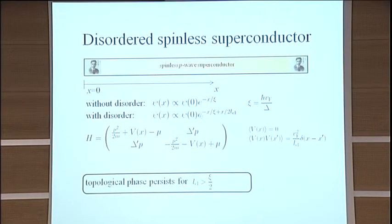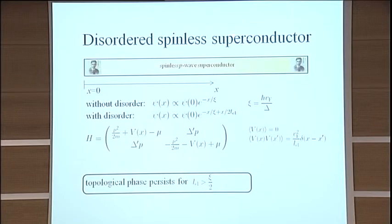And you can also see what happens, or where is the critical disorder, namely precisely if the exponential decay is gone, then the wave function of the Majoranas don't decay anymore. The left Majorana talks to the right Majorana. And if we have two Majoranas, there's nothing that prevents them from splitting and going to finite energies. So we see that the topological phase persists only if your disorder is weak enough, and we know precisely how weak the disorder has to be.